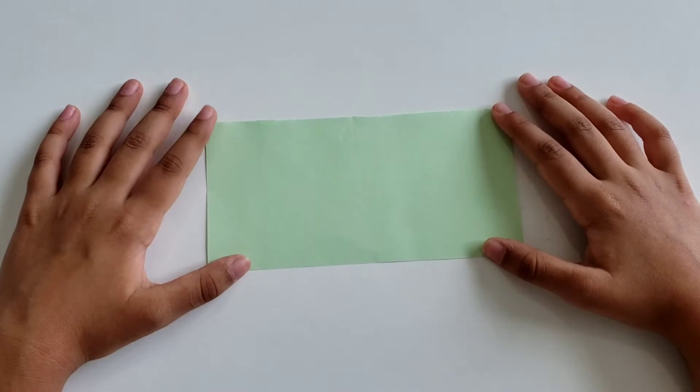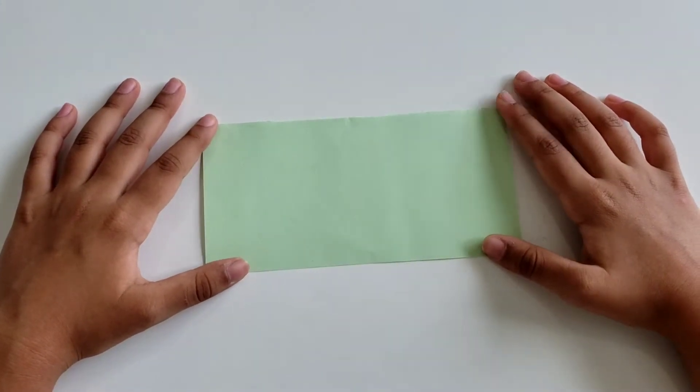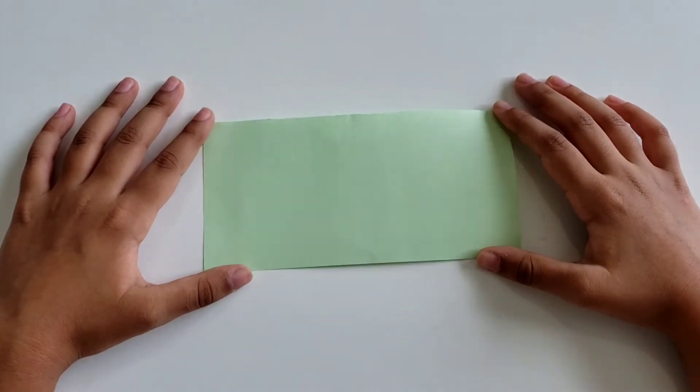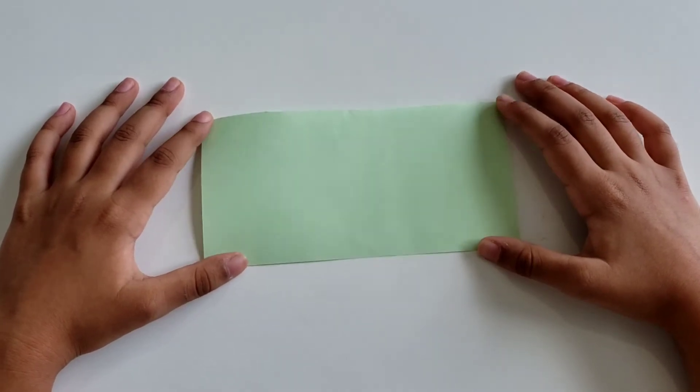Hi guys, today I'm going to teach you how to make a paper origami short. So start off with a rectangle paper. I am using a paper that has measurements of 7.5 centimeter by 15 centimeter.